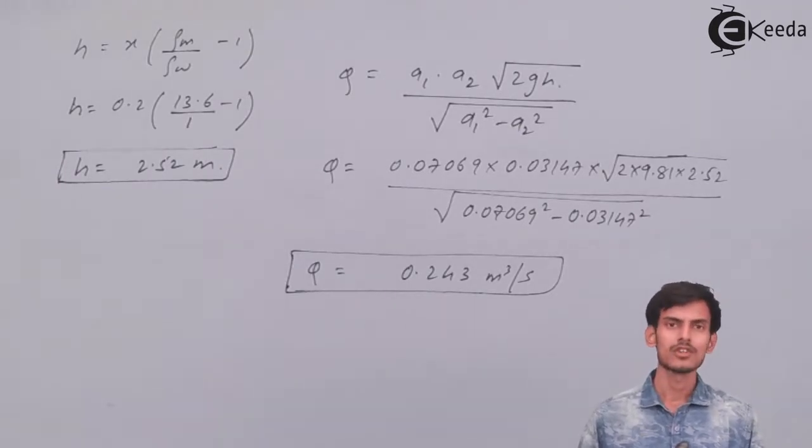Since the value of coefficient of discharge is given here, we need to find the actual discharge, which is the theoretical discharge multiplied by the coefficient of discharge value.